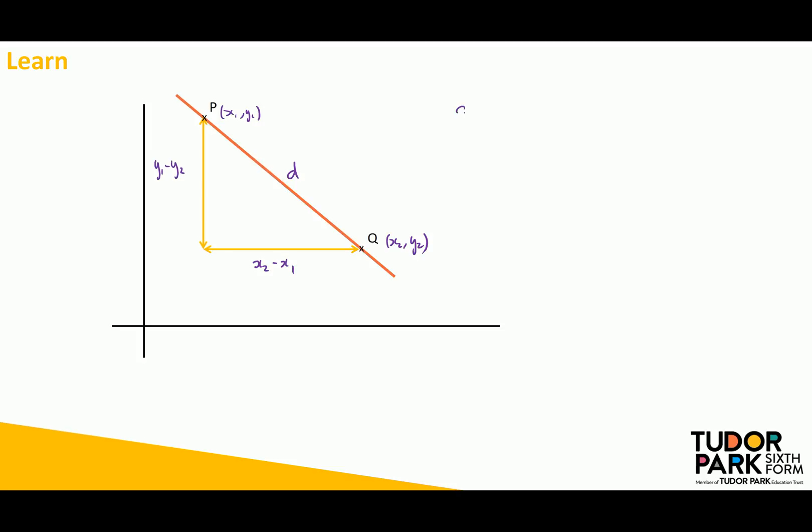Now to find that distance D, what I'm going to need to do is x2 minus x1 squared plus y1 minus y2 squared, and then square root my answer. Now, because I'm squaring these values, it actually doesn't matter which order I put them in, so sometimes it is more typical to see this as x1 minus x2 squared plus y1 minus y2 squared, and then square root it.